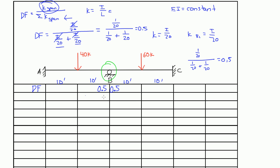For fixed ends A and C, there really is no distribution factor. For the moment distribution method, we only look at the joints in between those fixed ends. The next line is fixed end moments for all the spans. Distribution factor and fixed end moments are the ones you always write first. For any moment distribution problem, you always start with the distribution factor and your fixed end moments.